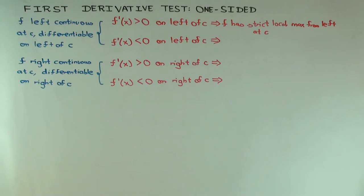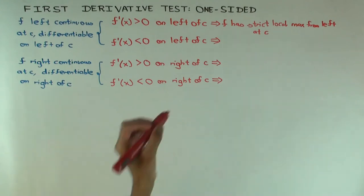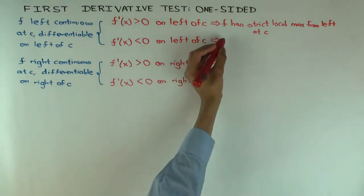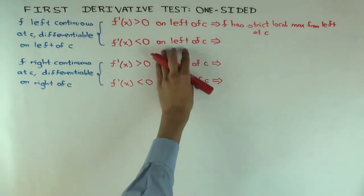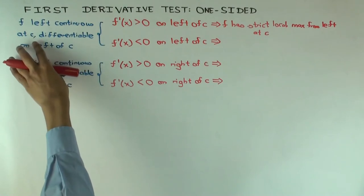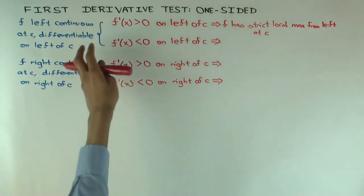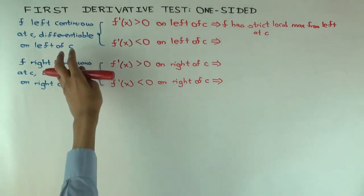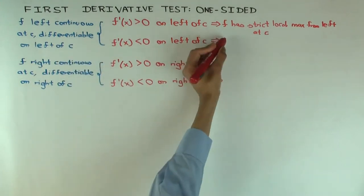What about f prime of x less than 0 on the left of c? The function is decreasing on the left of c. Since it's left continuous at c, that tells you it's decreasing up to and including the point c. Therefore you have a strict local minimum from the left.